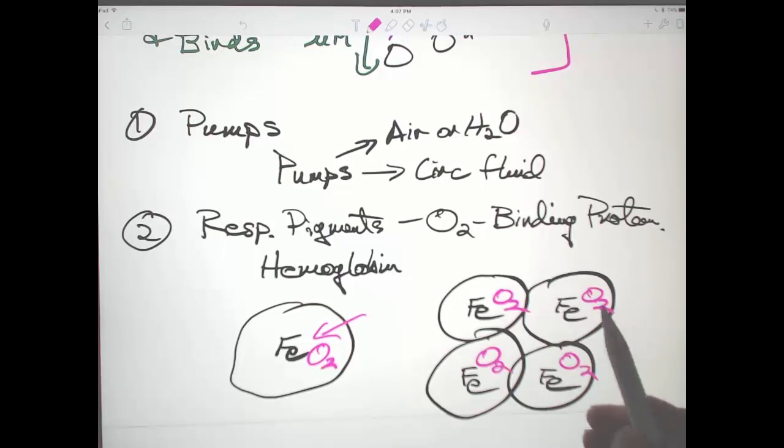And the affinity actually changes depending upon how many oxygens are bound. So when four oxygens are bound, the protein itself changes shape and holds those oxygens a little tighter. Once one oxygen is gone, that changes the shape of that particular hemoglobin, which in turn changes the shape of the neighbors and allows the others to be released more easily.